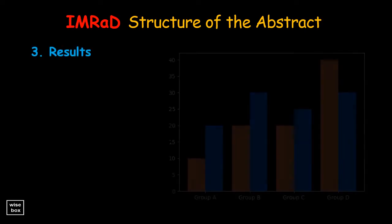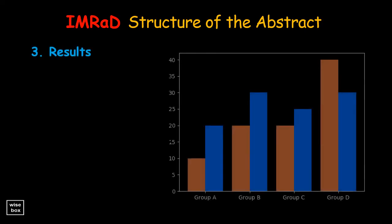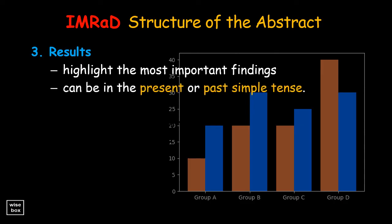Next part, summarize the main research results. Depending on how long and complex your research is, you may not be able to include all results here. Try to highlight only the most important findings that will allow the reader to understand your conclusions. This part of the abstract can be in the present or past simple tense.